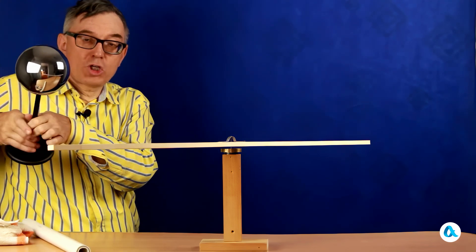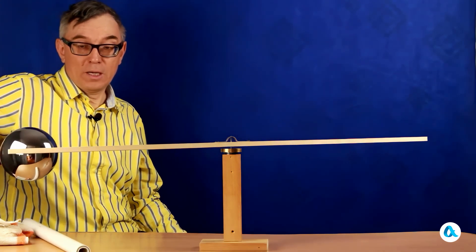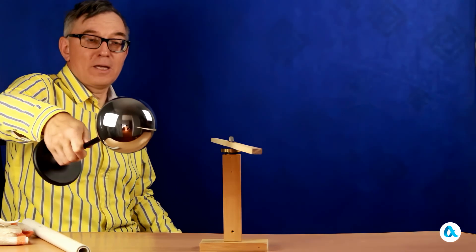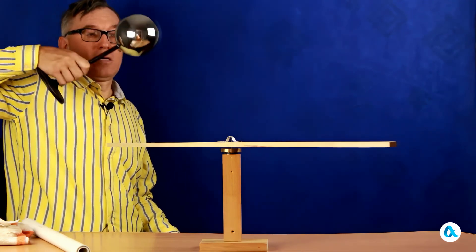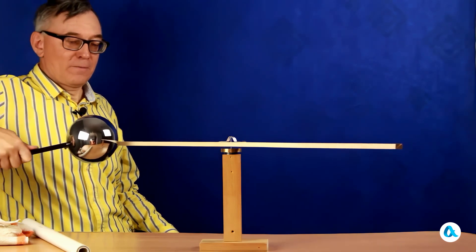And now I bring the ball very close to the rod, and the rod is strongly attracted to the ball, and it starts to rotate slowly at first, and then I can gradually accelerate this rotation. Or I can slow it down by bringing the ball closer.